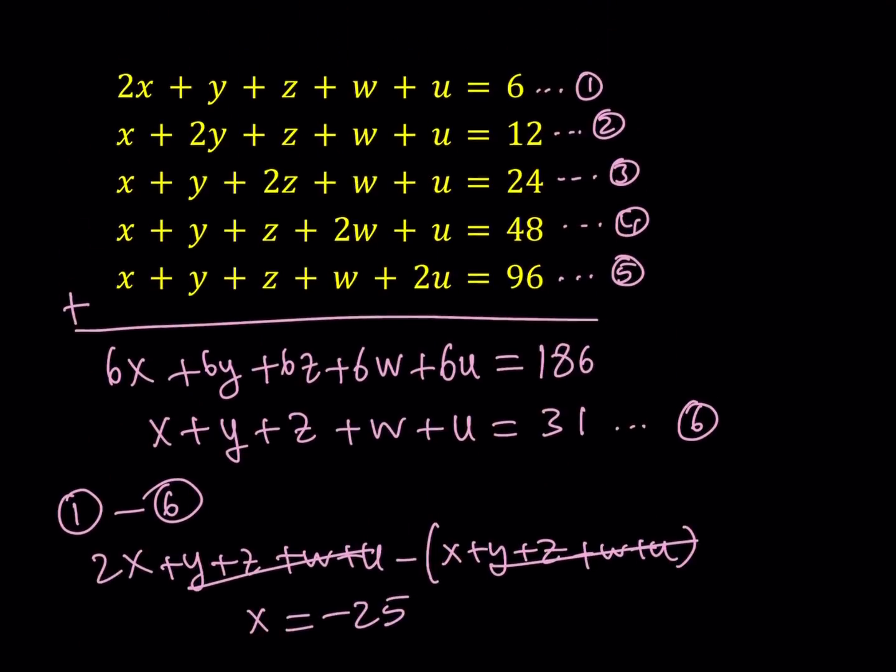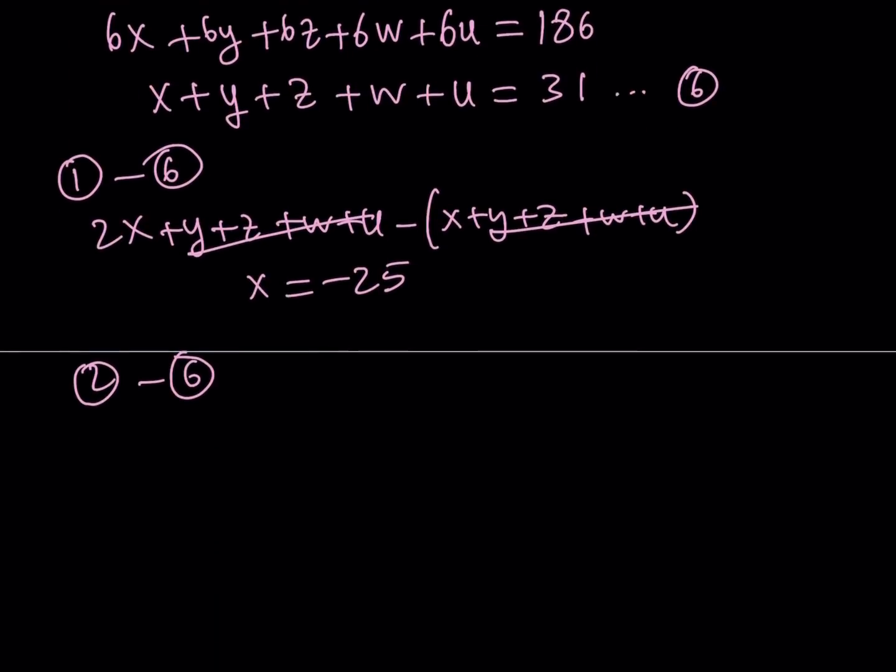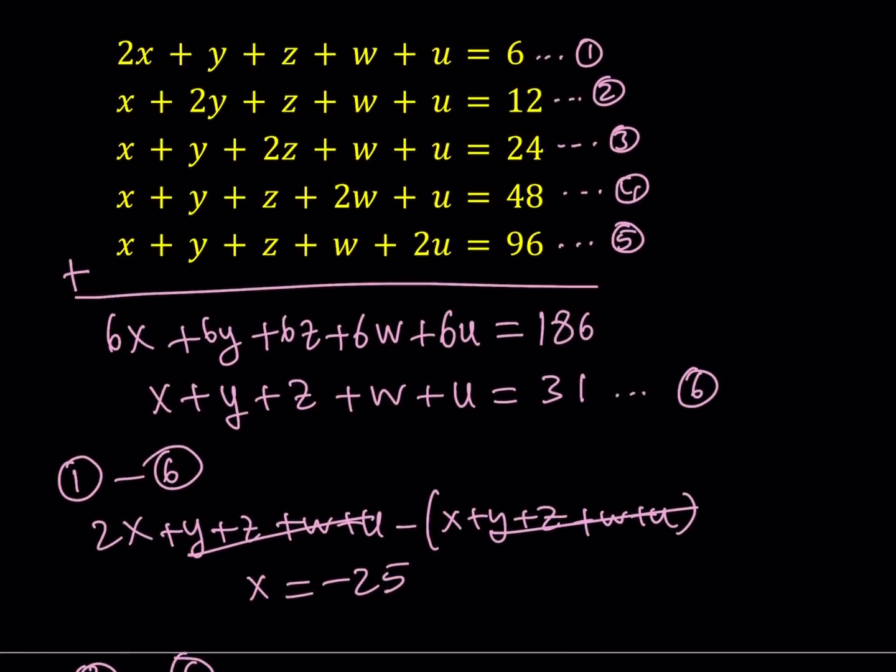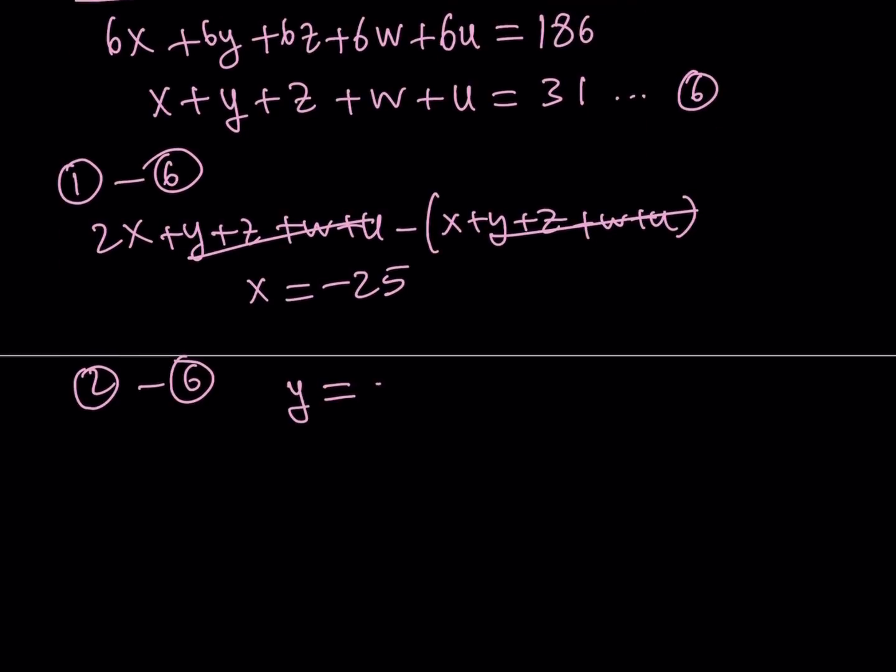If you do two minus six, well, we're going to be getting 12 minus 31. And that difference should give us Y. So, it looks like, is everything negative here? Well, it shouldn't be happening, right? So, from here, we get Y equals 12 minus 31. And that's going to be negative 19.